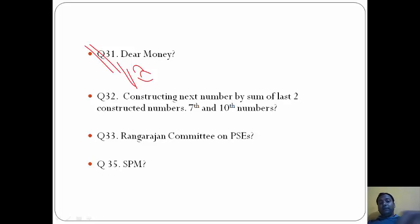Question 32: Constructing next number by sum of last two constructed numbers. So 0, 1, 1, the next number will be 1 plus 1 equals 2. The next will be 2 plus 1 equals 3.